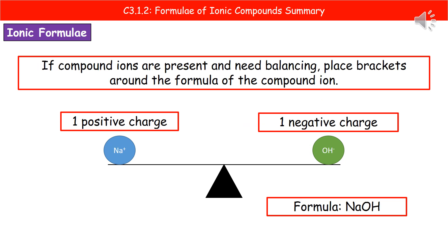If we consider the slightly more complex scenario of having a compound ion present, we still have to make sure those charges balance. In the first example here, we've got sodium with a single positive charge joining with a hydroxide ion, which has a single negative charge. Because we've got one positive and one negative, those charges are balanced, so the formula is just NaOH.